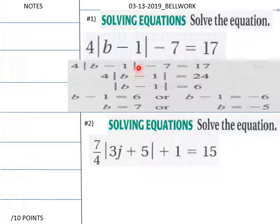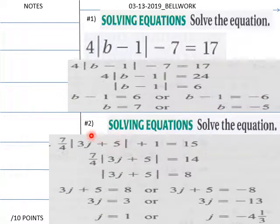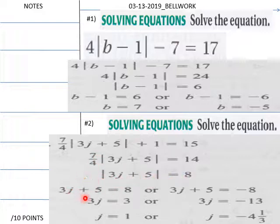For the first problem: 4|b minus 1| minus 7 equals 17. Move the 7 over, then divide through by 4, and we get b minus 1 equals 6, so b equals 7, or b minus 1 equals negative 6, so b equals negative 5. For the second problem, move over the 1, multiply through by 7 over 4, giving us 3j plus 5 equals 8 or 3j plus 5 equals negative 8. Solve both cases and check your solutions.